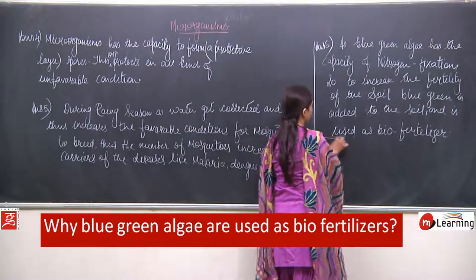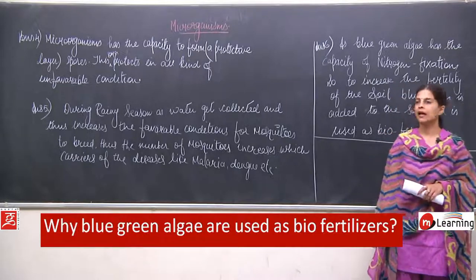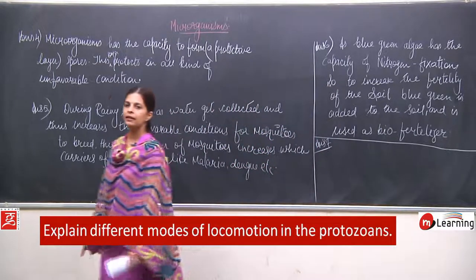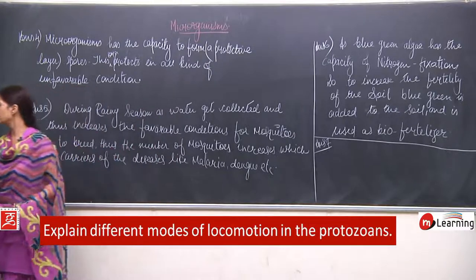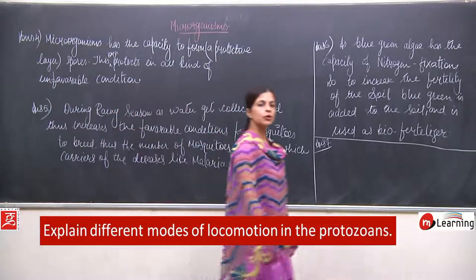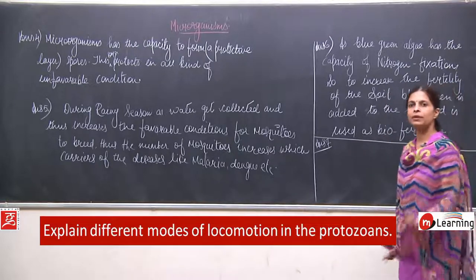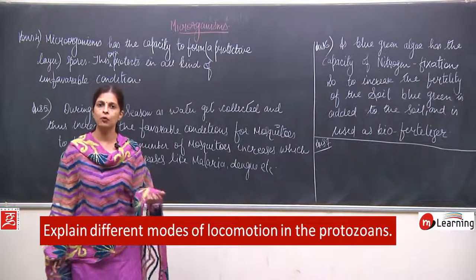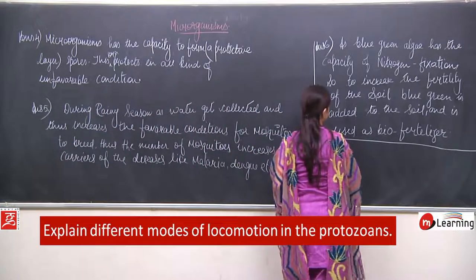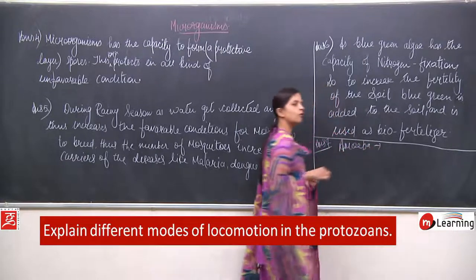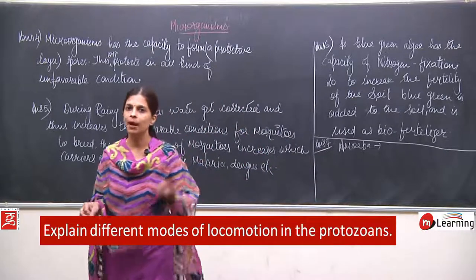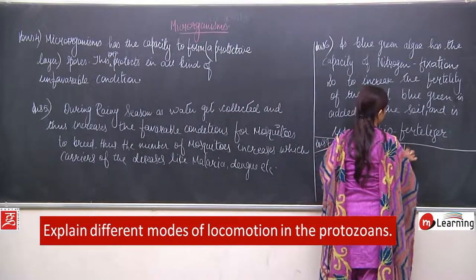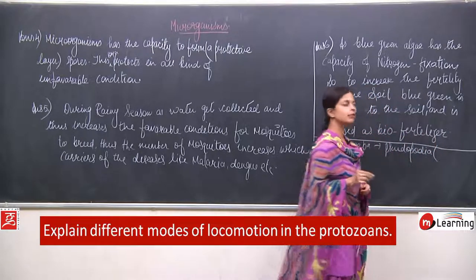We are coming to the last question of the extra questions on microorganisms. Question number seven: explain different modes of locomotion in protozoa — that means, how do protozoa move? There are different modes. Take the example of amoeba — amoeba does not have any extra part in its body. Amoeba moves with the help of the false foot, which is known as pseudopodia.